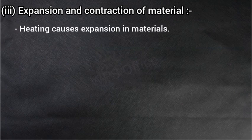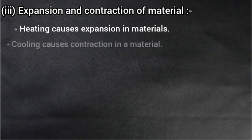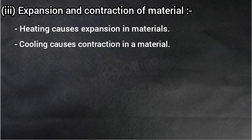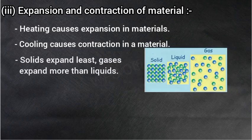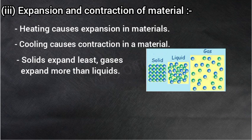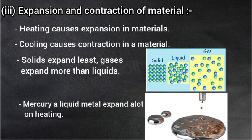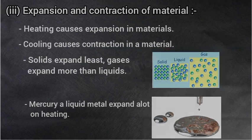And the next — expansion and contraction of material, यानि पदार्थों का प्रसार और संकुचन. प्रसार यानि फैलना — heating causes expansion in materials. किसी भी पदार्थ को गर्म करने से उसमें प्रसार या फैलाव होता है. Cooling causes contraction — जब किसी पदार्थ को ठंडा किया जाता है, तो उसमें संकुचन होता है. Solids expand least, gases expand more than liquids. Mercury — a liquid metal — expands a lot on heating. पारा एक ऐसा द्रव धातु है जो गर्म होने पर बहुत ज़्यादा फैलता है, और इसीलिए इसका उपयोग थर्मामीटर में किया जाता है.